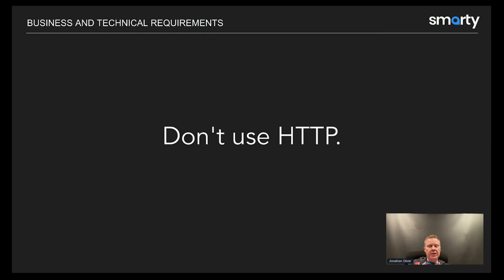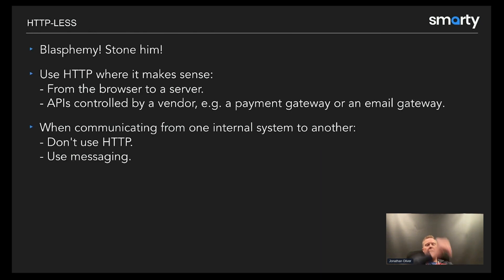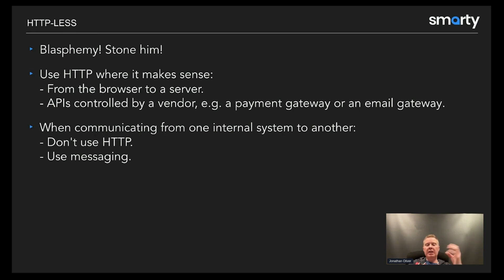We want to encapsulate all the logic — failure retry — in the microservice itself, not the caller. How do we do that? This is the heresy, and I'm going to lose about half of you: don't use HTTP. HTTP is a best-effort protocol and inherently unreliable. There are situations where we have to use it — HTTP makes sense from a browser to a server, or when a vendor like Stripe only exposes HTTP. But internally between our own systems that we have full control of, we don't want to use HTTP to communicate between them.